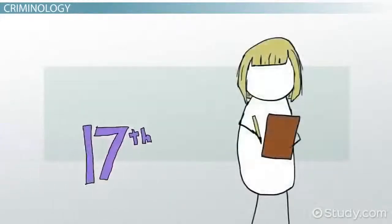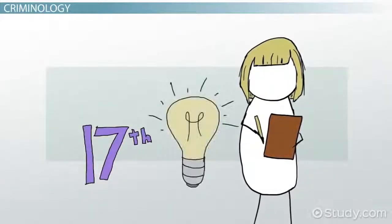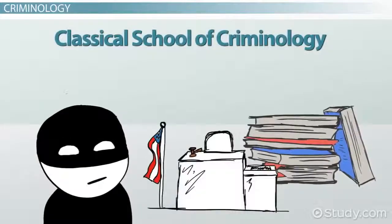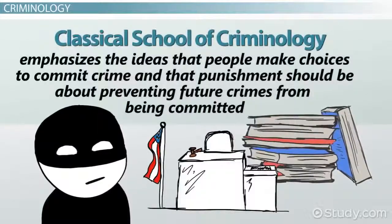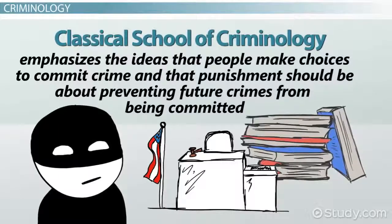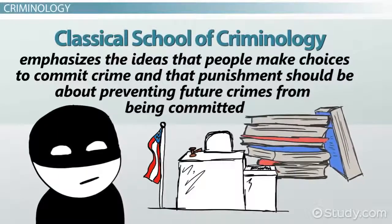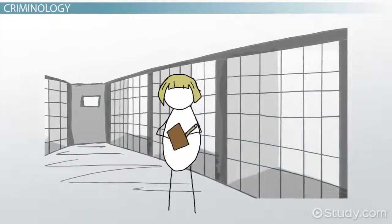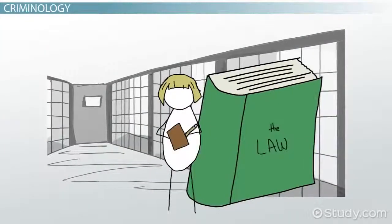But during the second half of the 17th century, a new movement known as the Enlightenment period began. From the Enlightenment came a school of thought known as the Classical School of Criminology, which emphasizes the ideas that people make choices to commit crime and that punishment should be about preventing future crimes from being committed. Let's look closer at the Classical School of Criminology, including its influence on modern law.